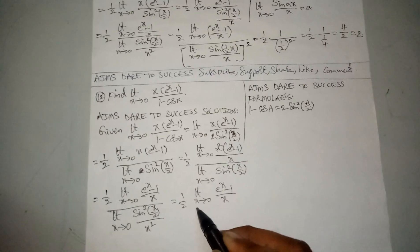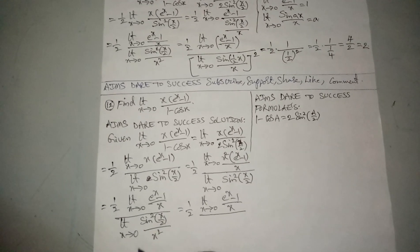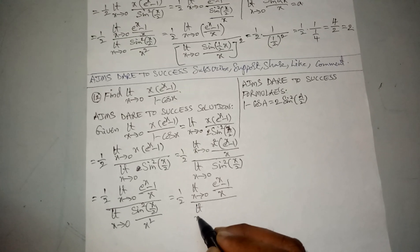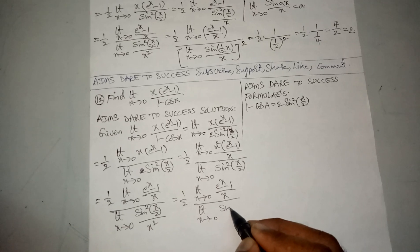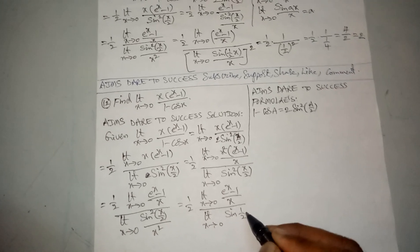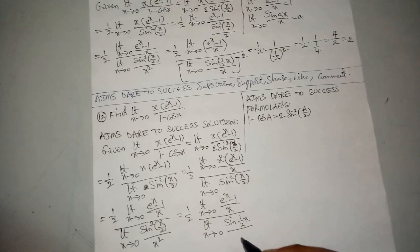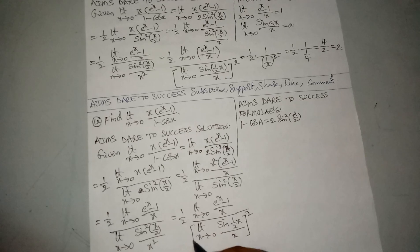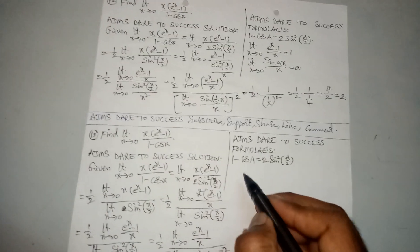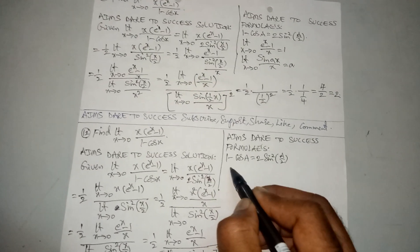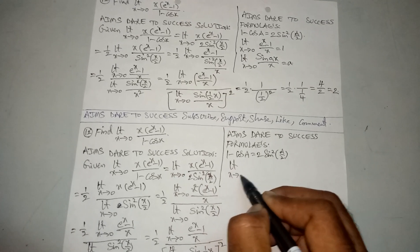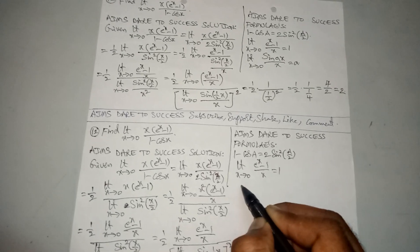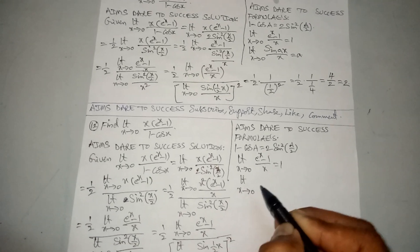The numerator and denominator are completely written as limit x tends to 0 of sine of x by 2 over x times one half, all whole squared. Now the key limits and continuity formulas: limit x tends to 0 of e to the power x minus 1 divided by x equals 1. And one more formula: limit x tends to 0 of sin(ax) divided by x equals a.